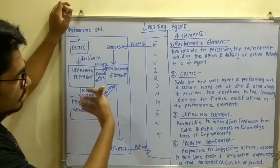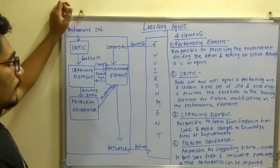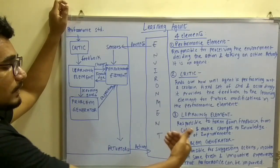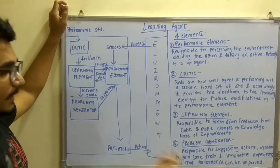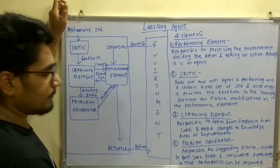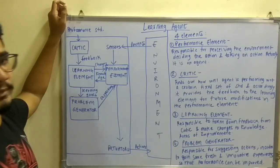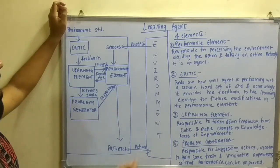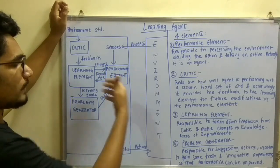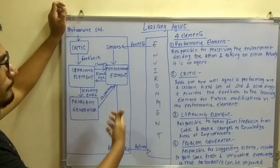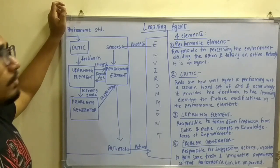The learning element has its own knowledge base, driven by the critic, and it suggests areas of improvement where the agent needs to improve. Then you have the problem generator which defines different kinds of real-time activities or actions to be done by the agent and gains fresh innovative experiences, so that performance can be improved day by day. The performance element gets stronger and stronger for performing actions over time.